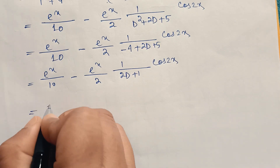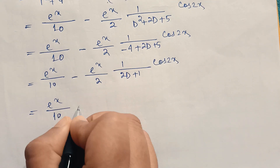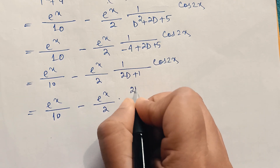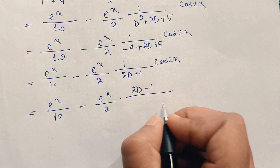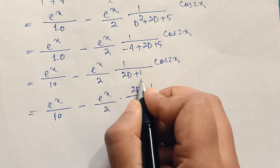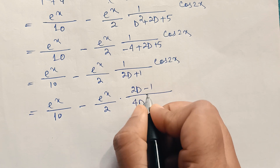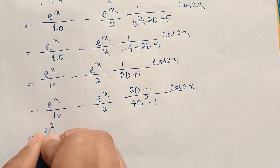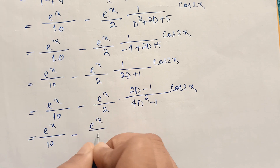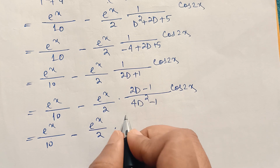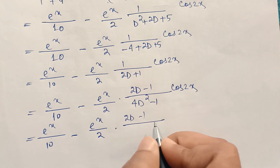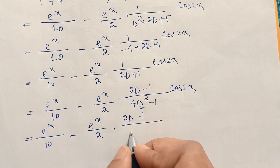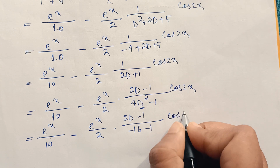To rationalize 1/(2D + 1), we multiply numerator and denominator by (2D - 1), giving (2D - 1)/(4D² - 1). Substituting D² = -4, the denominator becomes 4(-4) - 1 = -16 - 1 = -17. So the expression becomes eˣ/10 minus eˣ/2 · (2D - 1)/(-17) · cos2x.